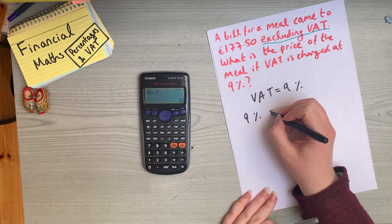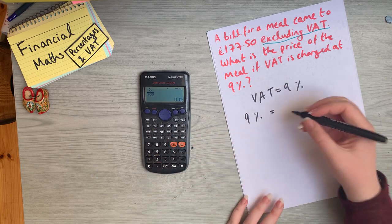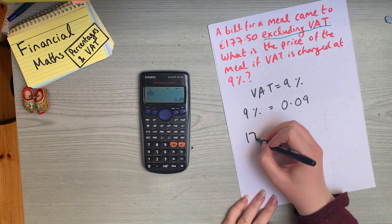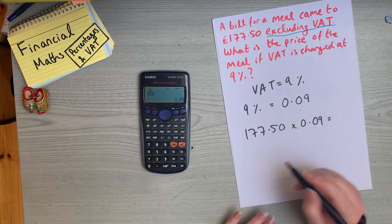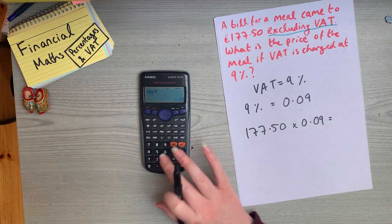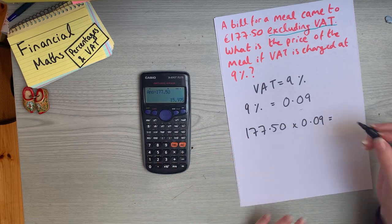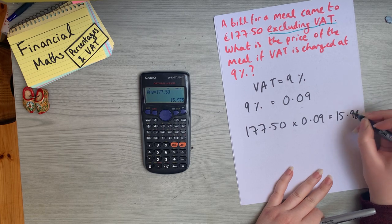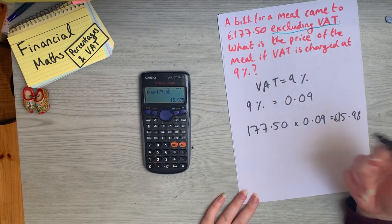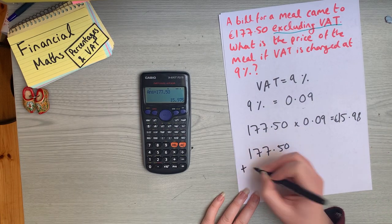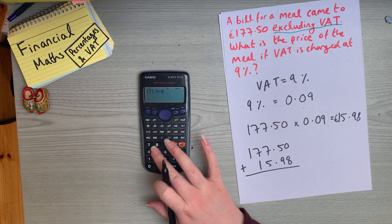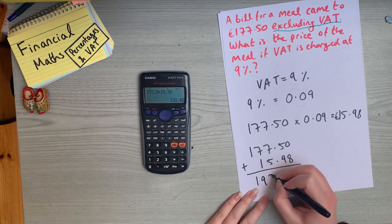VAT is charged at 9%. As a decimal, 9 divided by 100 gives us 0.09. Then in order to get 9% of €177.50, we multiply by the decimal form of the percentage: 177.50 times 0.09 — or equivalently divide by 100 and multiply by 9, which is the exact same thing. That equals €15.98. The last thing to do to find the total cost of the bill including VAT is to add €15.98 onto the original price, giving us €193.48. That is the price of the bill.